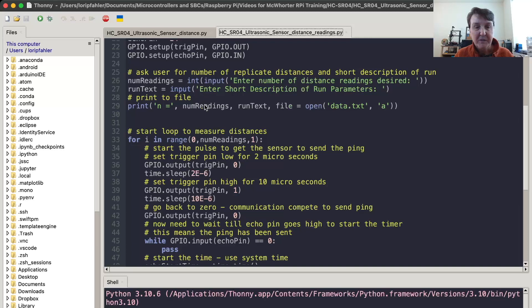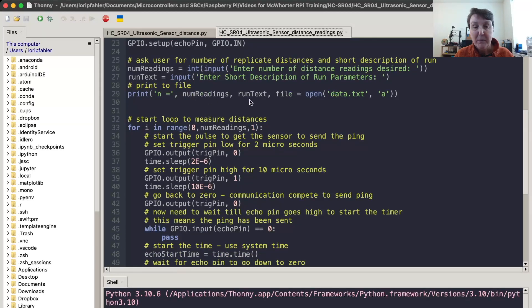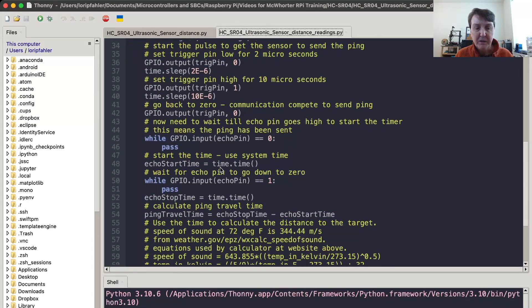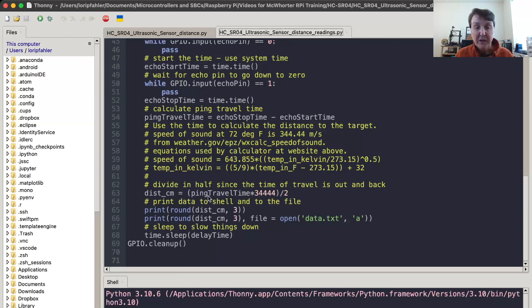We're going to print that information to a file called data.txt. We're going to do it in append mode. So you can actually keep running this program over and over again and it'll keep appending all your data one after the other. It'll be separated by the number of distances you wanted and your description. The loop is pretty similar. Runs through and does all the same calculations. Except for down here it prints the data both to the shell and to the file here data.txt. Goes through the sleep and continues going and then it does a GPIO cleanup.